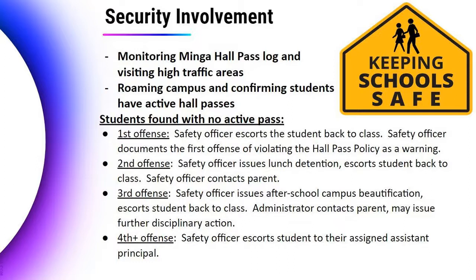Should you be stopped by security and found to not have an active hall pass: the first offense, the safety officer will escort you back to class and document that you did not have an active hall pass. The second offense, the safety officer issues a lunch detention, escorts you back to class, and contacts your parents. The third offense, the safety officer issues after-school campus beautification, escorts students back to class, and an administrator contacts your parents — there may be further disciplinary actions. The fourth offense, the safety officer escorts students to their assigned assistant principal.